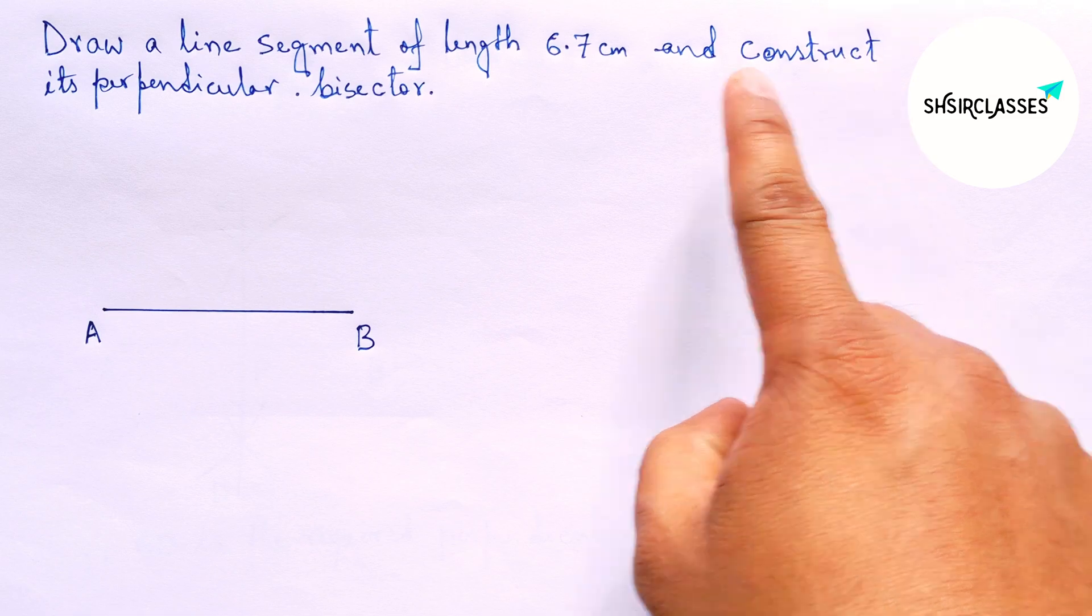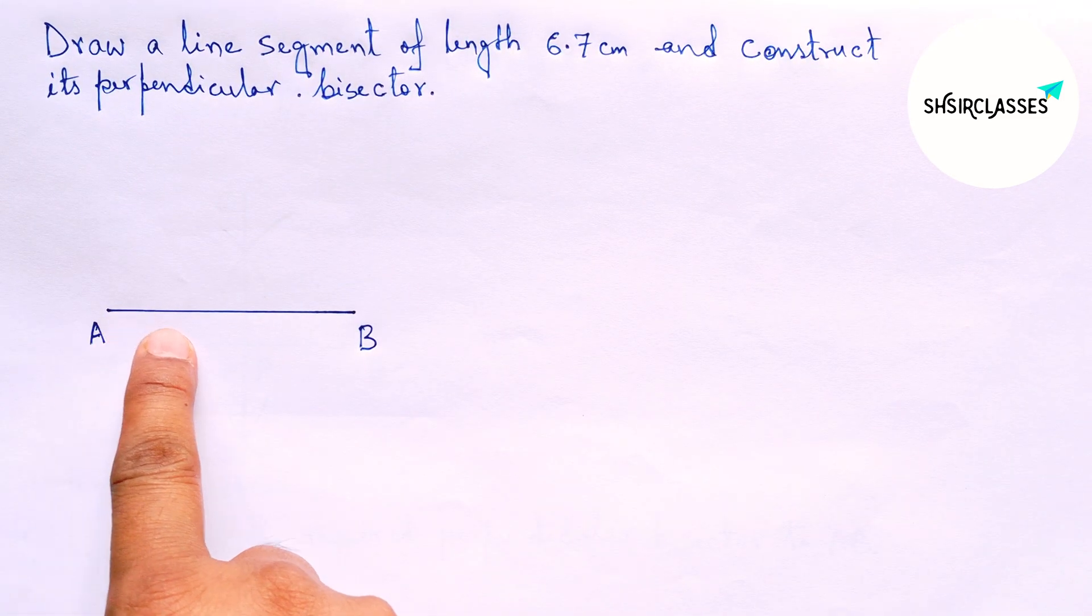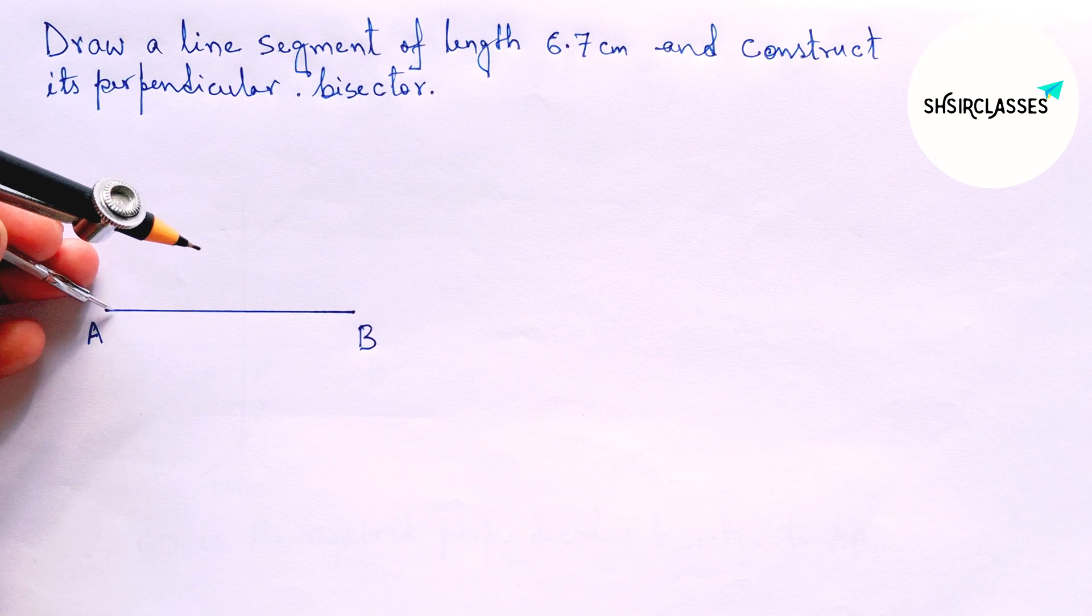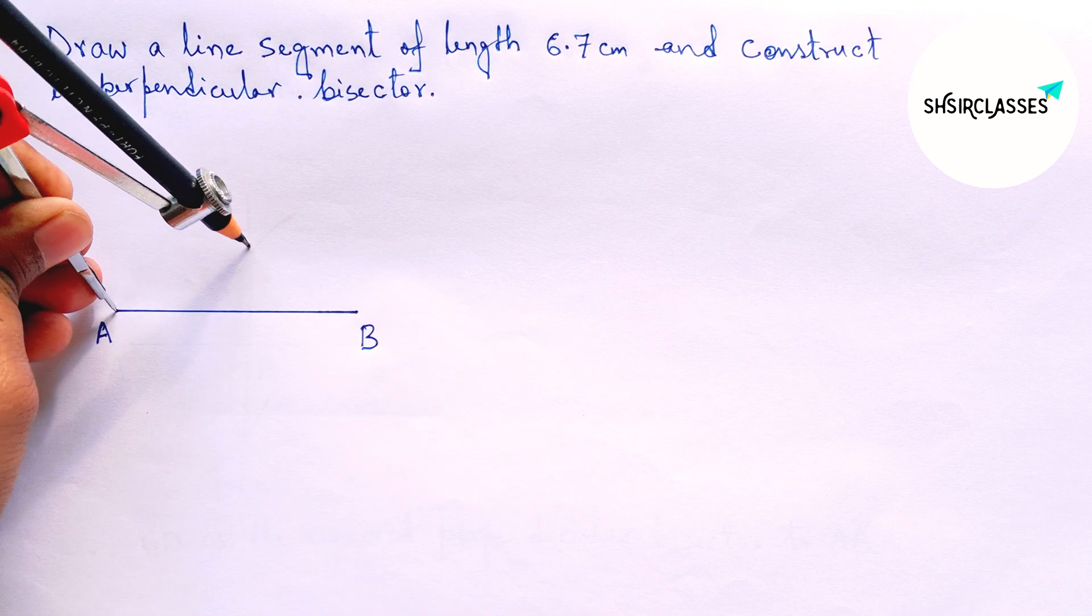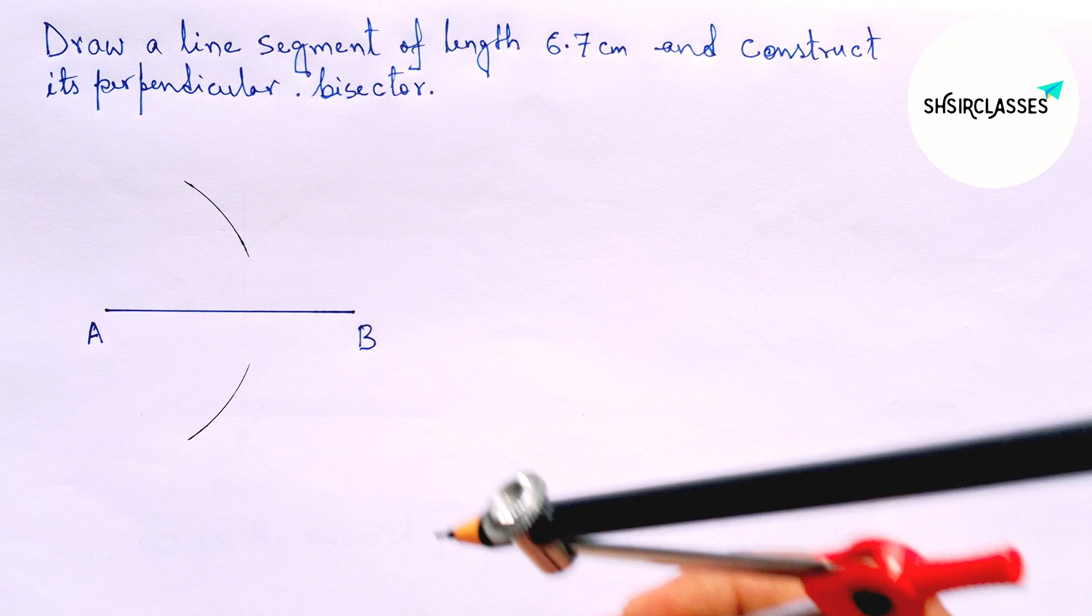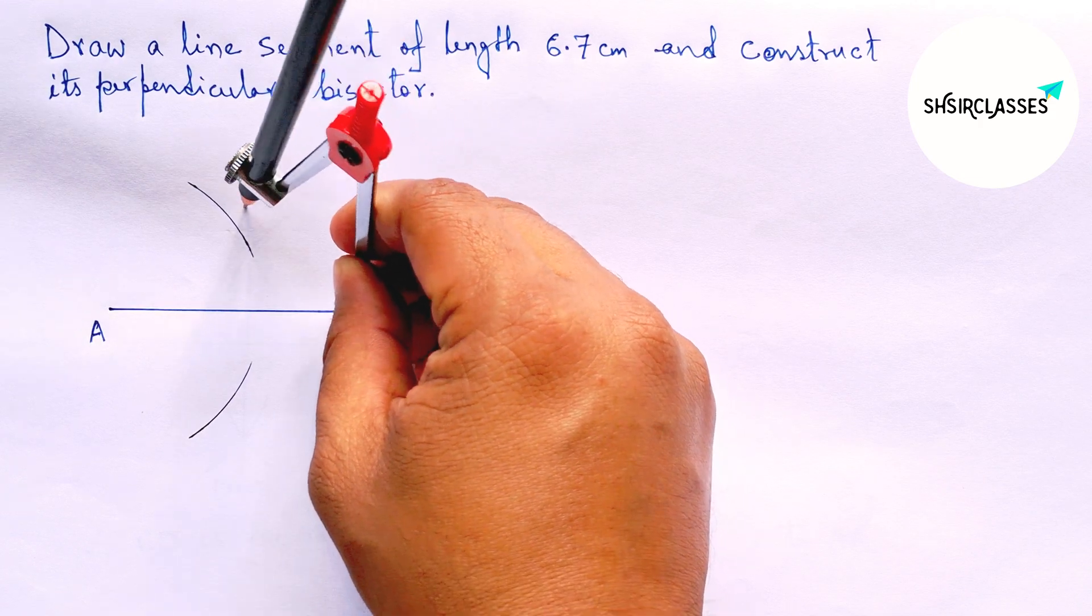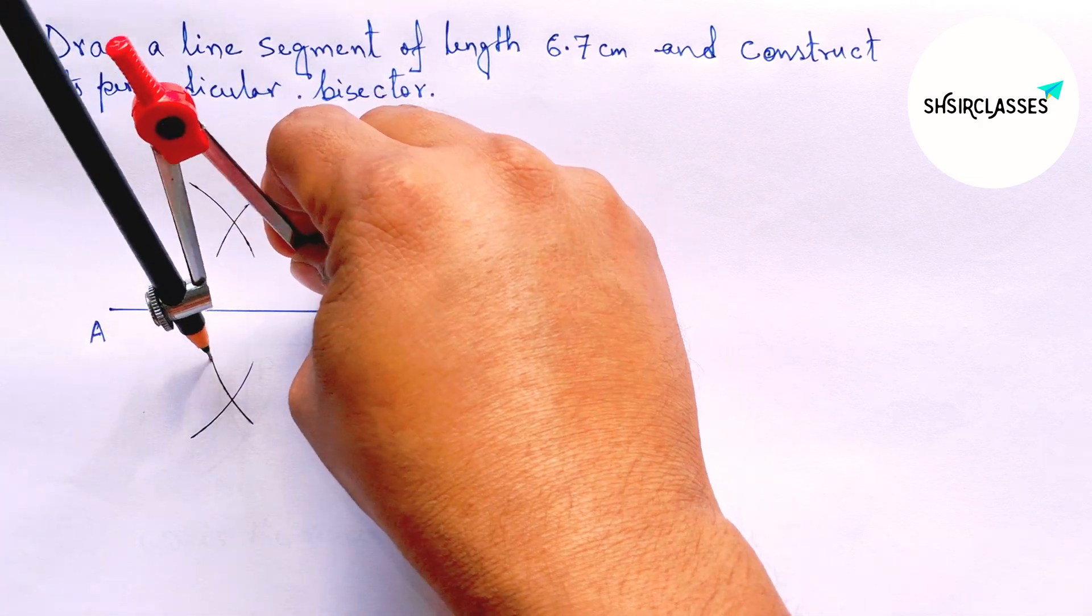Now construct its perpendicular bisector to line AB with the help of a compass. Put the compass on point A, take greater than half of AB, and draw arcs this way. Again with the same length, put the compass on point B and cut here and here.